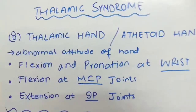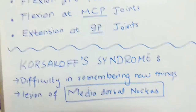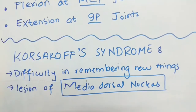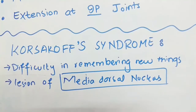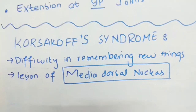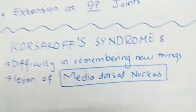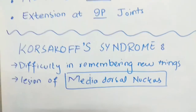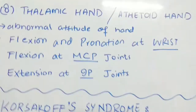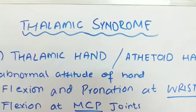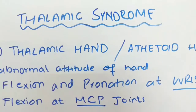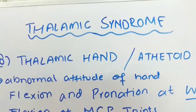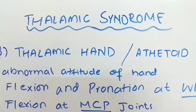Those were the symptoms of thalamic syndrome caused by a posterior ventral nucleus lesion. Another syndrome, not due to the posterior ventral nucleus but due to the medial dorsal nucleus lesion, is Korsakoff syndrome. In Korsakoff syndrome, the patient has difficulty remembering new things. Note that thalamic syndrome can appear under other names in exam questions, so make sure to review the alternate names listed after this video.